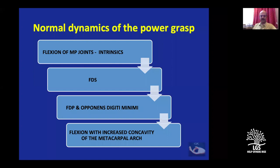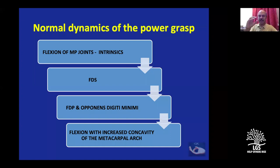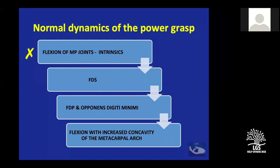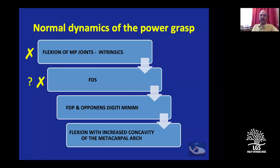Now we shall try to understand the dynamics of the loss of the ulnar nerve. Normally, the metacarpophalangeal joints flex first — that is done by the intrinsics — then the IP joint flexion is done by the FDS and FDP. The opponents and cupping occurs, and then flexion with increased concavity increases the power. In ulnar nerve palsy, the flexion of the MP joints is lost.